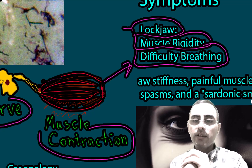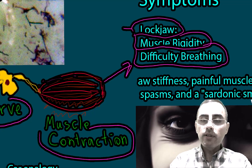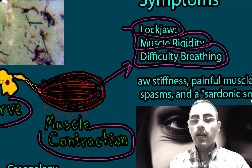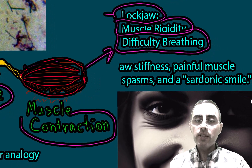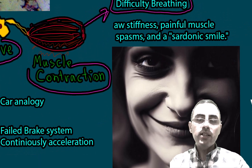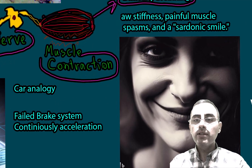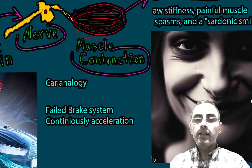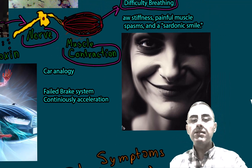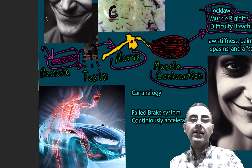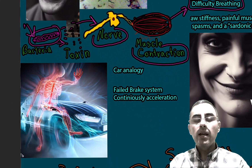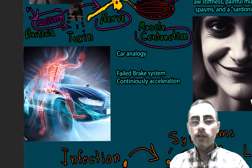The third important symptom is difficulty breathing due to spasm and contraction of the breathing muscles, which can cause death. This contraction of muscles is very painful, and the sardonic smile remains a characteristic sign of tetanus.